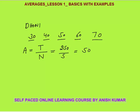So average — this is only one single concept — average is total by N: total of all observations divided by number of observations. If you need to calculate total, it will always be A into N, by the same concept.